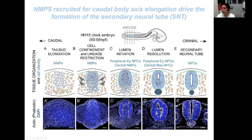Later on, these cells undergo a mesenchymal-to-epithelial transition. They elongate and polarize to form multiple lumens that appear between the epithelial and mesenchymal cells. During lumen resolution, these multiple lumens coalesce into two bigger lumens that eventually merge into a single lumen to form the final neural tube.